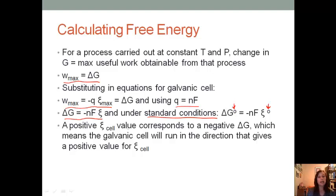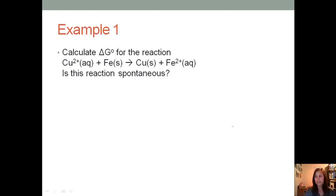Remember, we want a positive cell potential, and this corresponds to a negative delta G, which we also want. So this means if both of these things are true, that the galvanic cell is going to run in the direction that gives the positive value for the potential of the cell. So let's talk about how to calculate that.